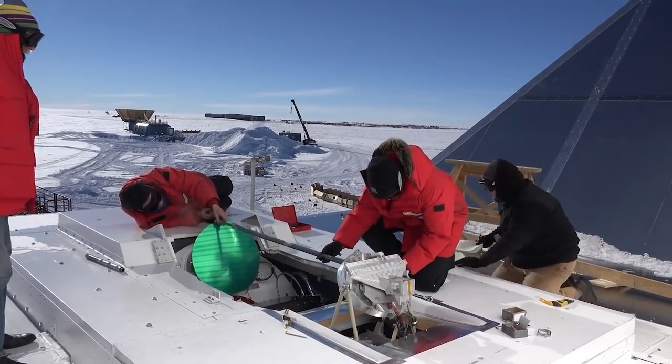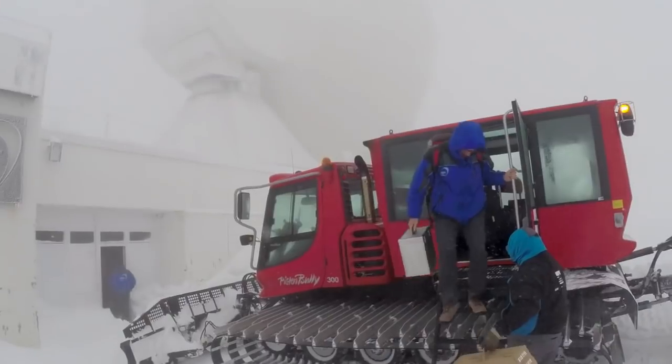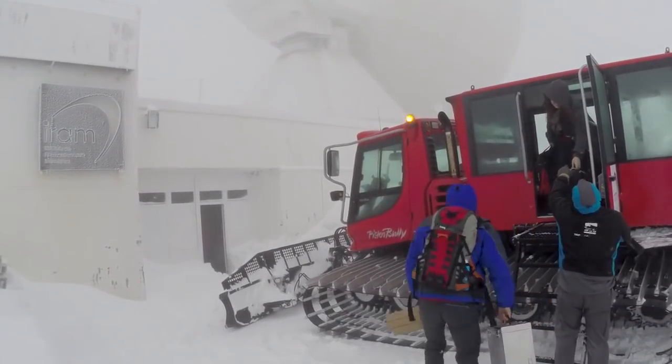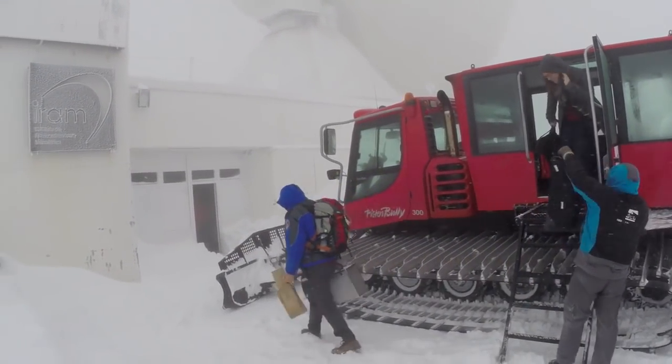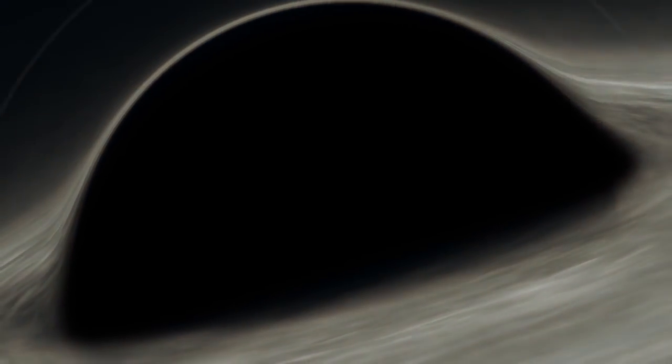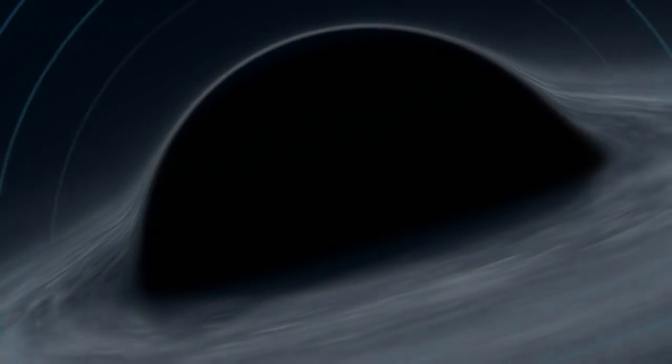To understand exactly how hard that was, let us drop in some facts. First of all, you should know that the EHT telescopes could not see the black hole itself, as it is invisible. Rather, they picked up the radio signals from the hot glowing gas around it and imaged the shadow the black hole casts on it.